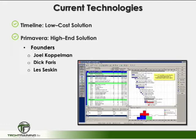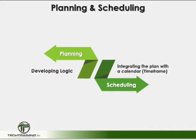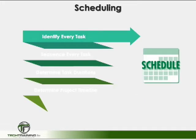The predominant software for construction scheduling was introduced by Primavera, founded by Dick Ferris, Joel Kopelman, and Les Seskin. Primavera is still a leading construction scheduling company. This leads us back to planning and scheduling: planning relates to developing the logic of how a project will be completed, while scheduling consists of integrating that plan with a calendar or a specific timeframe.